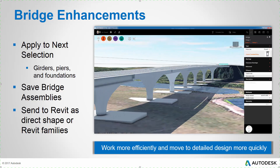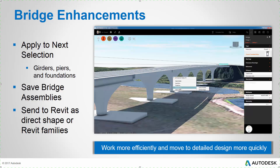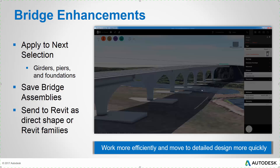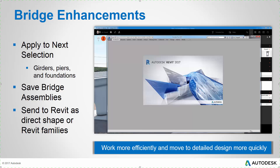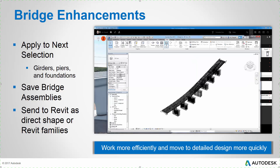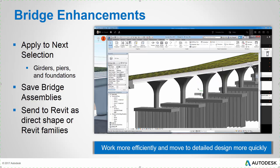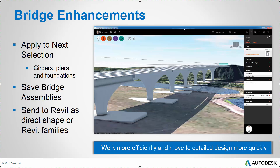And finally, I have more ways to get to detailed design from my preliminary bridge design in InfraWorks 360. I can now select the bridge, right-click, and send to Revit either as Revit families or as direct shapes. These bridge features allow you to work more efficiently and move to detailed design more quickly.